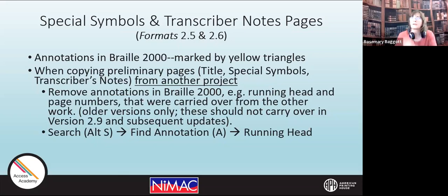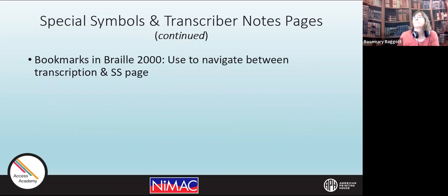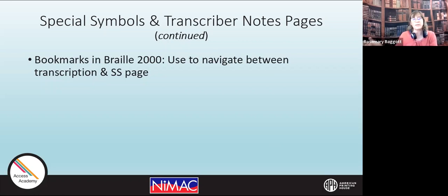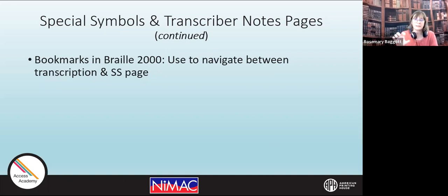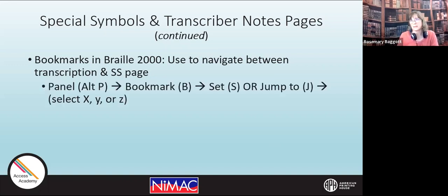I'll show you how that happens and then how to fix it. I use bookmarks in Braille 2000 a lot to navigate between the transcription as I'm working on it and the special symbols pages, especially in a technical work. I might be doing a math or science work in a new volume further on in the book, and there are symbols used in that volume that weren't in the original volumes. At that point, I used to just make a list and go back and enter them on the special symbols page — that was a headache. Now I just use bookmarks: I'll set a bookmark where I am in the text, go back to the special symbols page, find the place where I want to add that symbol, do that, and then use the bookmark to go back to my text.